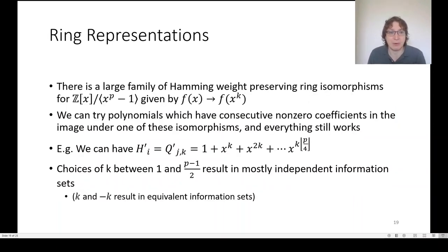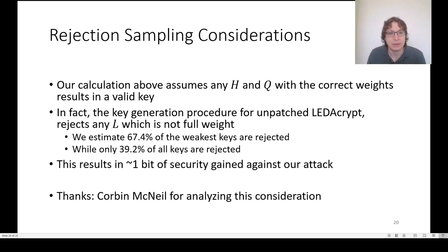Then there's ring representations. There's a bunch of ring isomorphisms that take the ring that's equivalent to a cyclic matrix to itself, where you just take the polynomial variable x and replace it with x to the k. And if the coefficients are consecutive under any of these representations, then the same additivity thing happens.